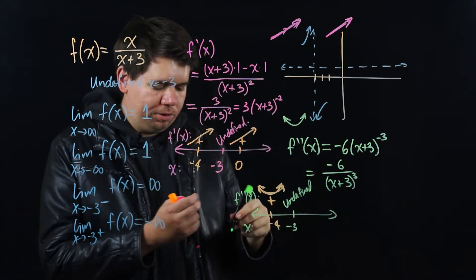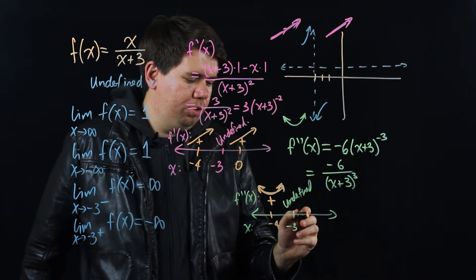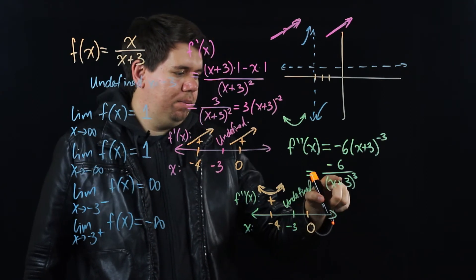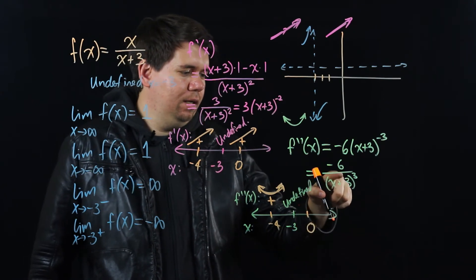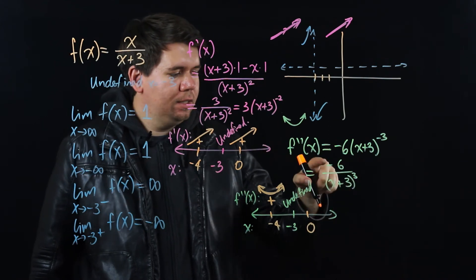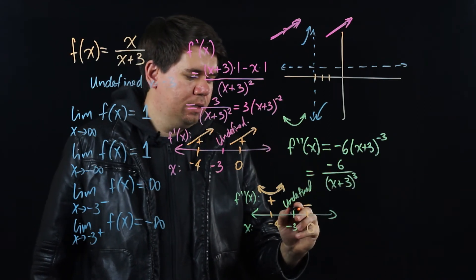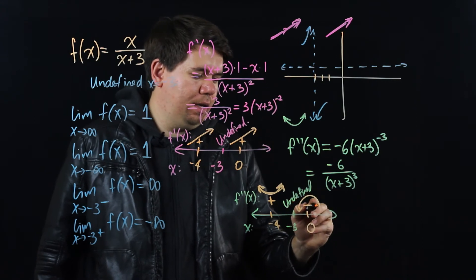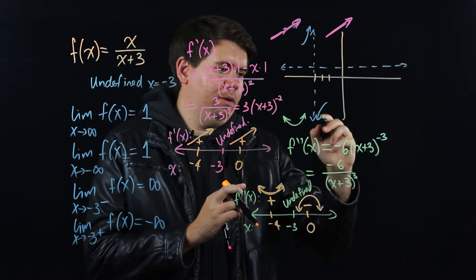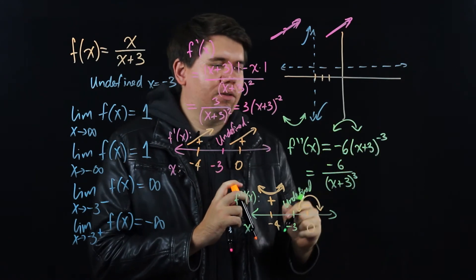When x is greater than -3, like at x = 0: the second derivative is −6 over 3³, which is negative divided by positive — a negative number. Negative concavity means concave down, so the graph bends downward after x = -3.